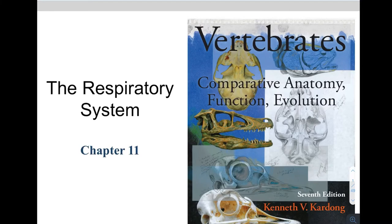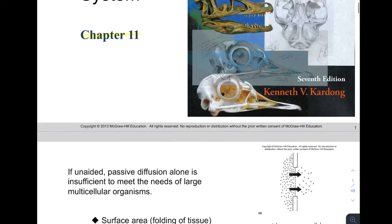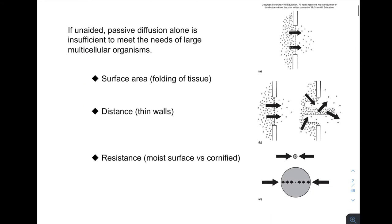We are looking at the respiratory system of vertebrates, chapter 11. The first thing we need to talk about is diffusion — in general, small things go from a higher concentration to a lower concentration and they like to reach equilibrium. However, with large multicellular organisms, passive diffusion alone is not going to be enough, so we need to figure out ways to aid this process.